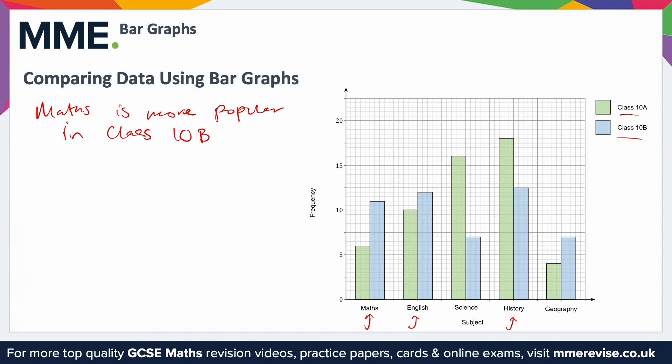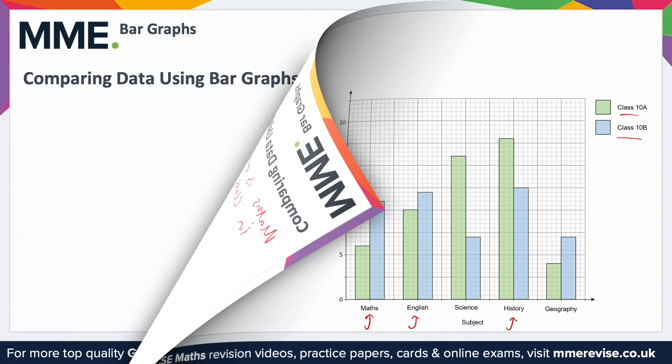For example, if this was test scores, you would want longer bars and those people would perform better. So you could just say this bar is longer, therefore they perform better in the test. In this context, it's to do with favourite subjects, so the longer bar represents more people choosing that as their favourite.